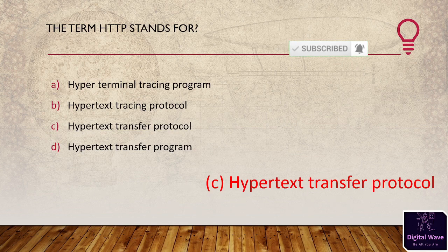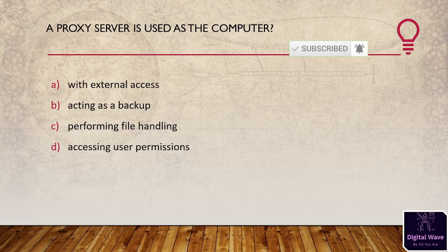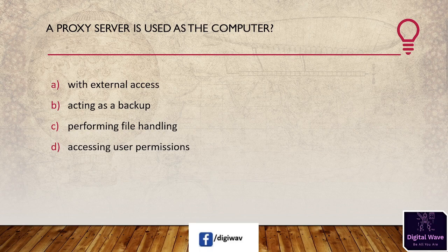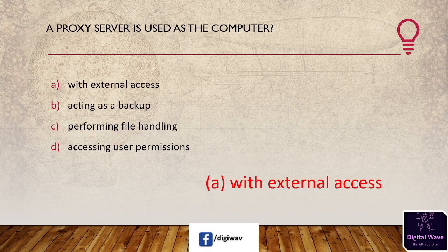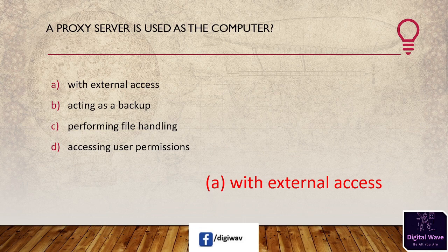Next question: a proxy server is used as — A) the computer with external access, B) acting as a backup, C) performing file handling, D) accessing user permission. The answer is A, with external access. A proxy server is a computer that acts as a gateway between a user's computer and the internet. The proxy server is also called an application-level gateway, allowing the client computer to establish indirect network connections to another network.